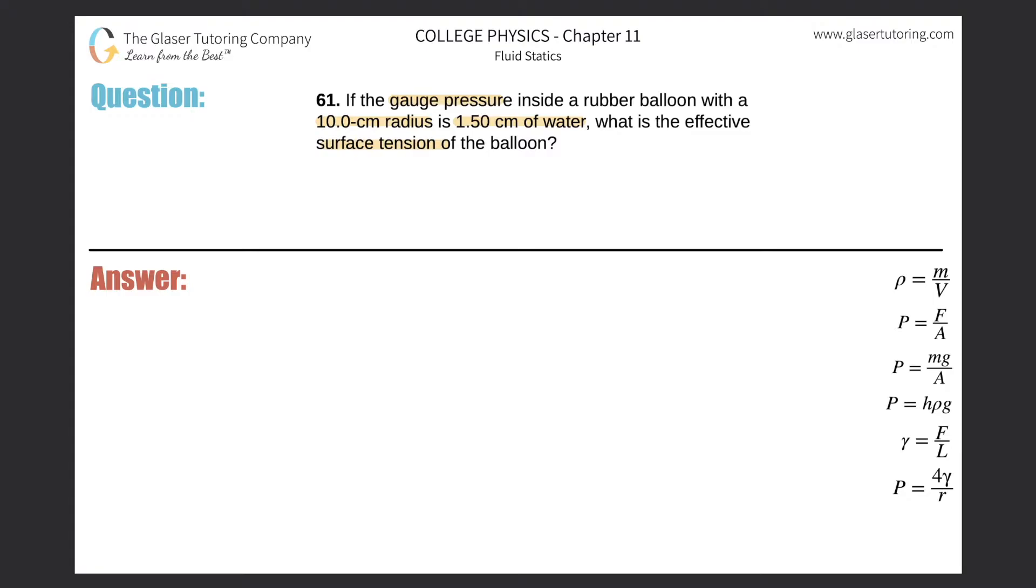They are asking us to calculate surface tension, they're giving us a radius, and they gave us a pressure just not in the right units. So most likely we'll be using this formula down here on the right hand side. Now this formula is specific for a spherical object, and we are to assume that the balloon will be a perfect sphere. Obviously it's not in reality, but whatever.